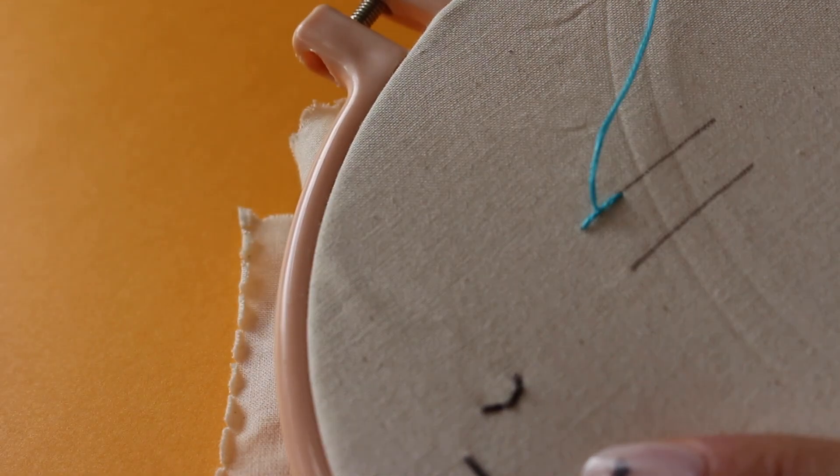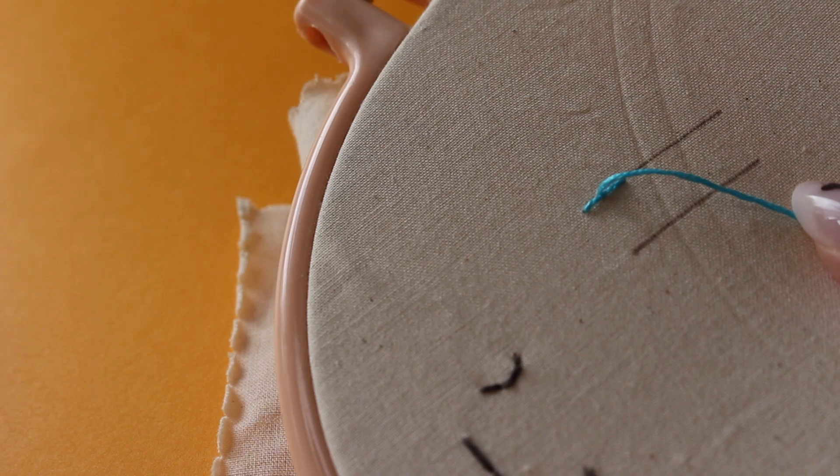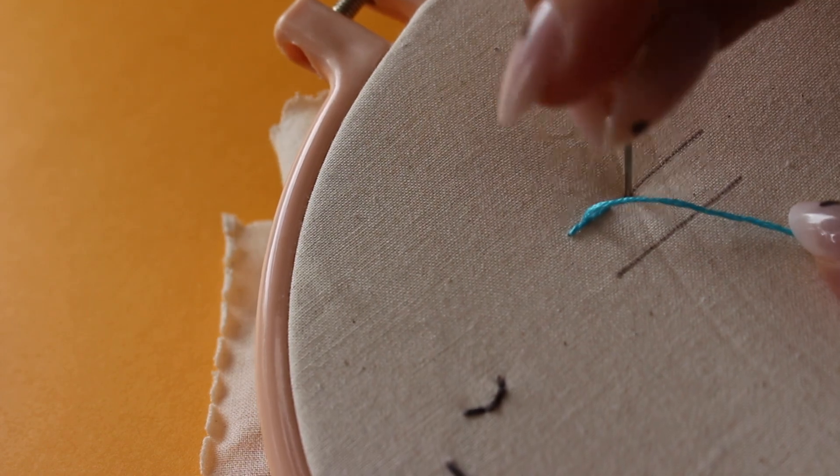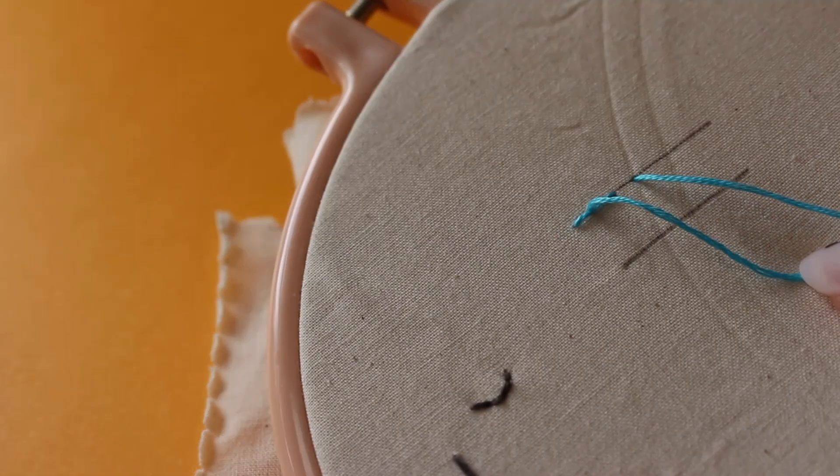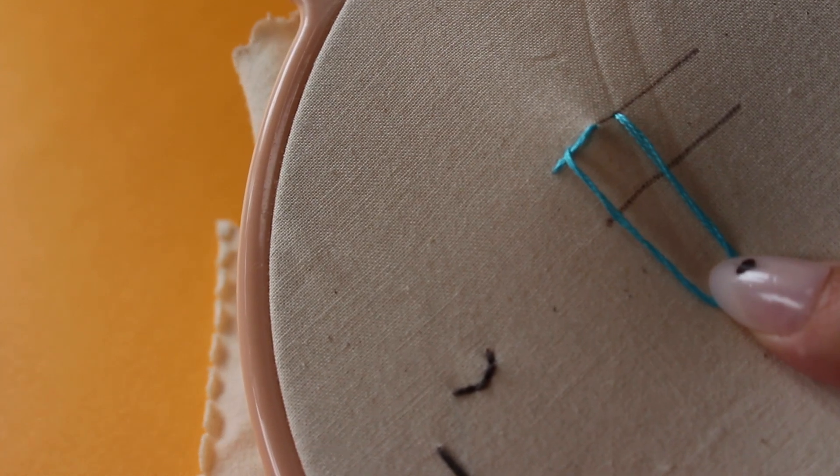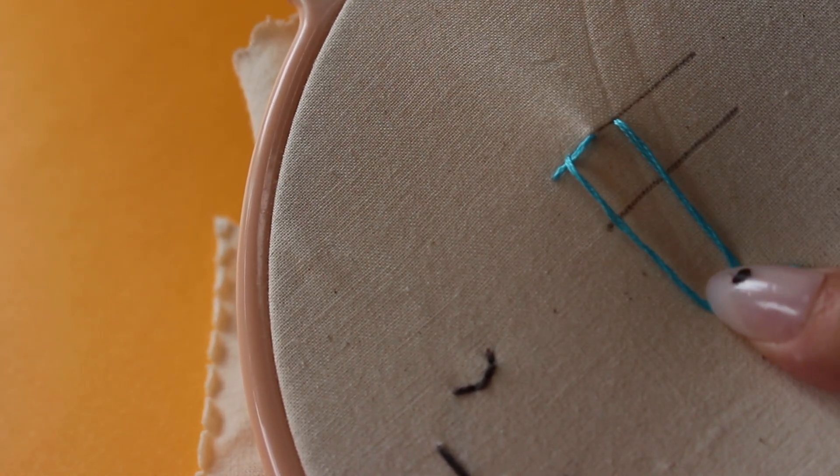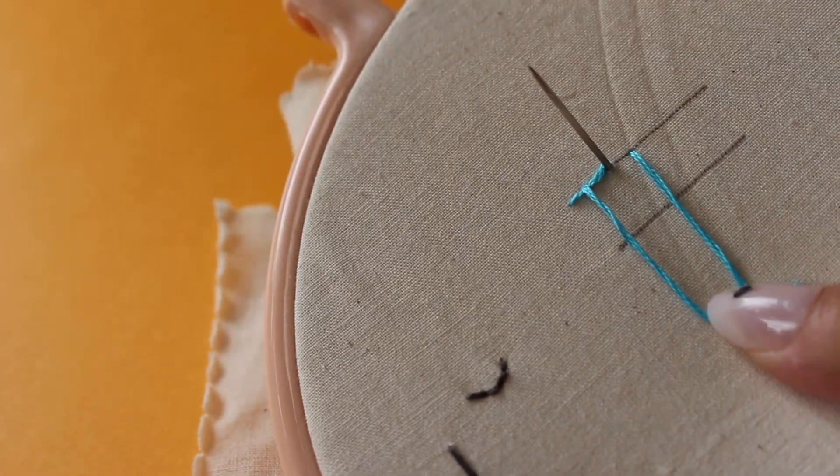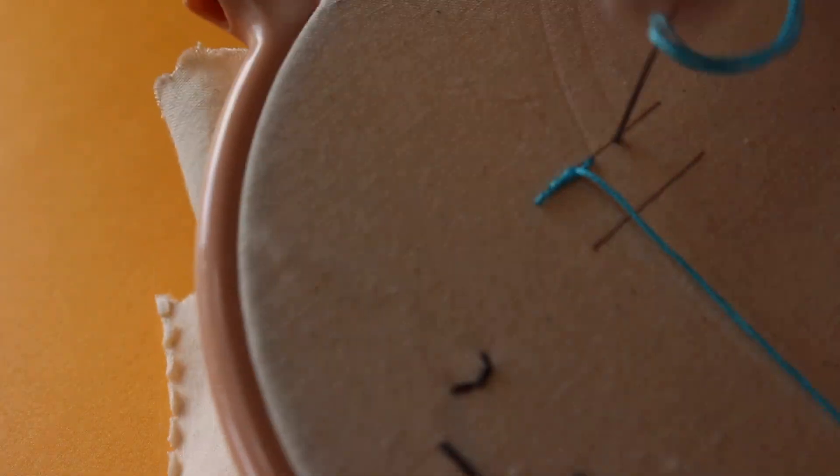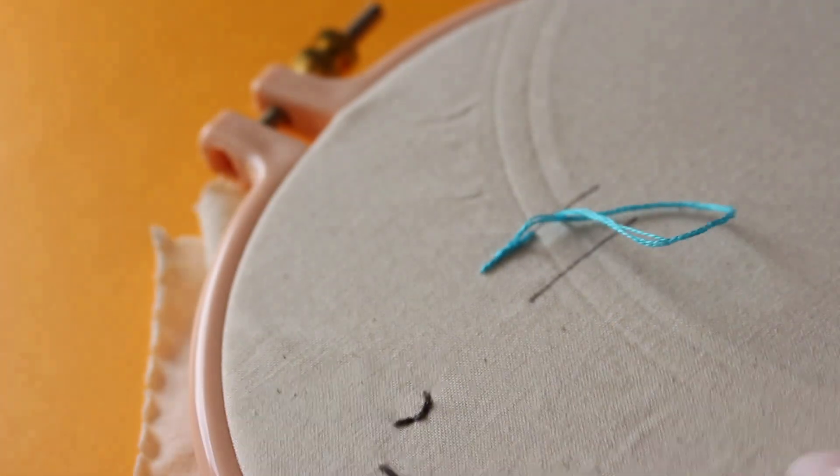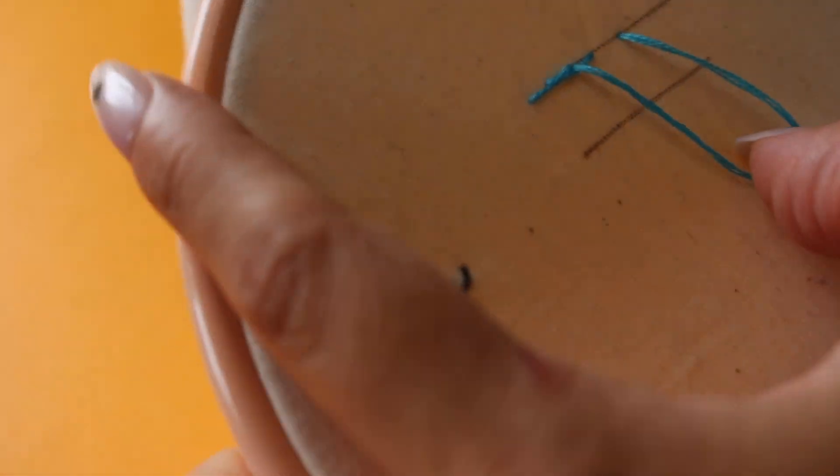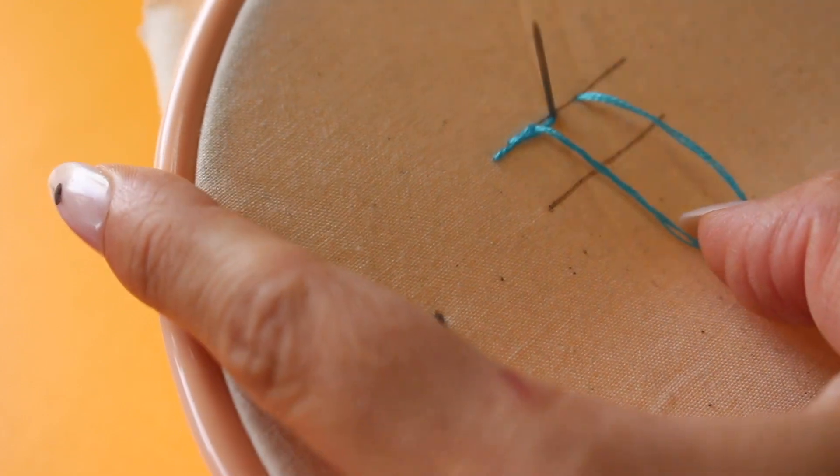Now for the next stitch we're going to just go in a regular stitch length forward, and once again we're going to leave a little loop. We're going to come back, this time we're going to enter where we ended our last stitch, and then we're going to want to pull all the way through. You're just going to continue repeating that while keeping in mind to always keep your loops on the same side. You don't want to alternate. If you started with the loops on the bottom, continue doing it that way until you finish.